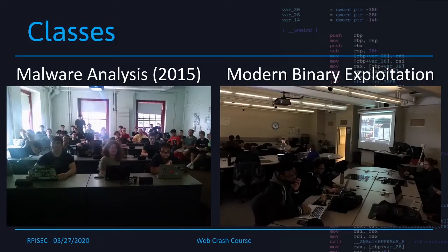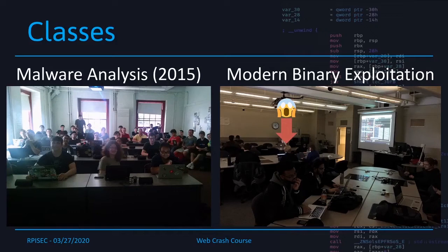There are classes here at RPI which can help you learn the skills to do these things, such as malware analysis and modern binary exploitation. That's actually me in the picture on the right from spring 2018 when I was taking MBE. Our two main offerings are malware analysis, which focuses on looking at malicious programs and reverse engineering them to figure out what they do — great for learning about reverse engineering, especially on Windows. Modern binary exploitation flips things around and is where you learn more about the offensive side, taking a program and actually writing an exploit against it.